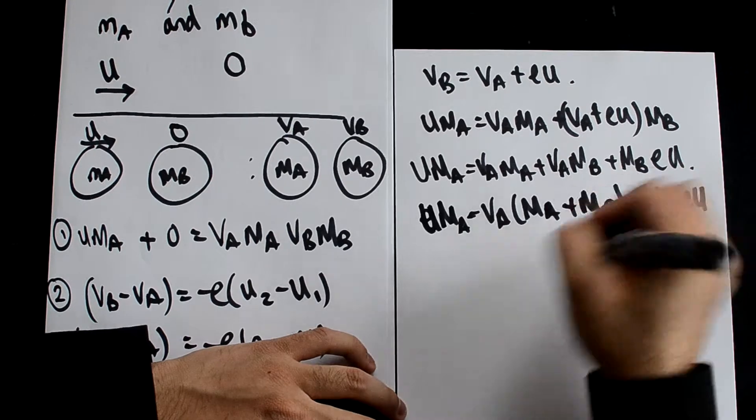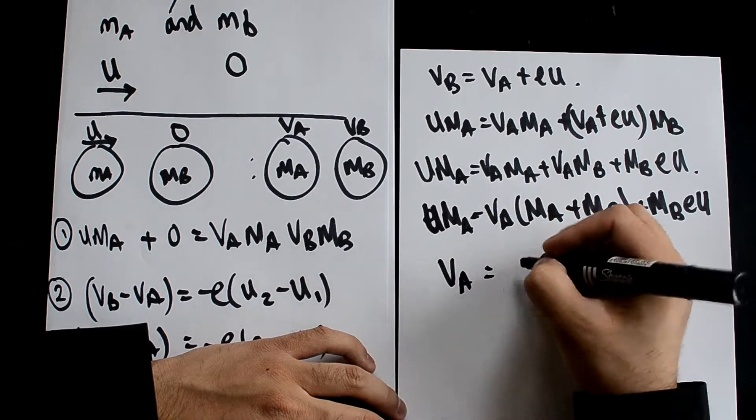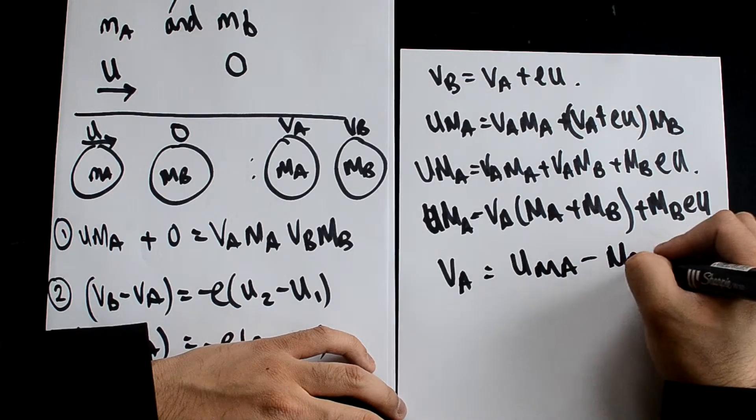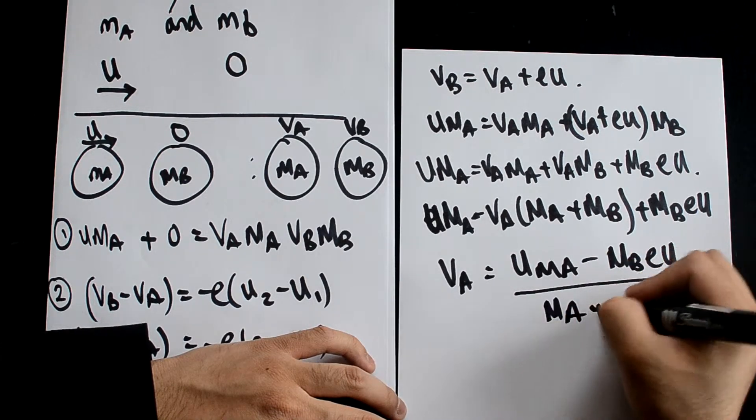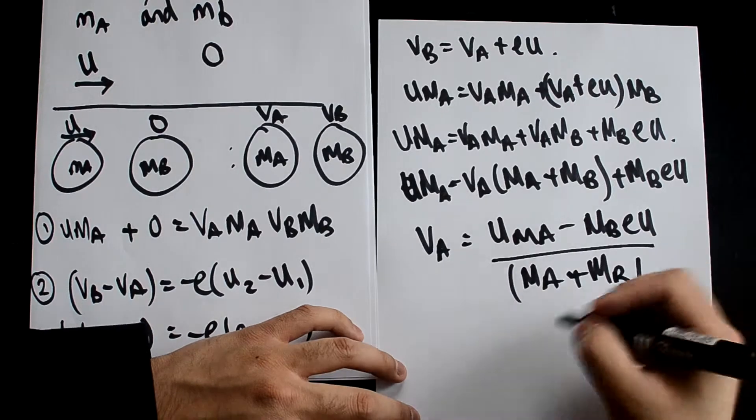So va(ma plus mb) plus mb e u equals u ma. Let's subtract this over and divide everything. Now we get va equals (u ma minus mb e u) all over (ma plus mb), which can be simplified further.